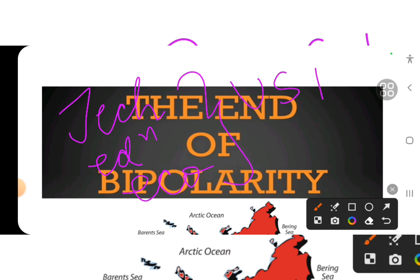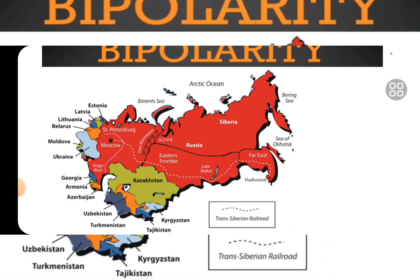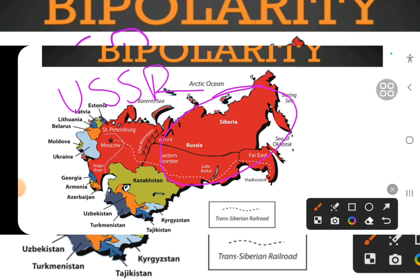USSR stands for Union of Soviet Socialist Republics. Fifteen different countries came together to form the USSR. The major portion of USSR was Russia. Soviet means organization or council, and 15 different countries came together on shared principles and ideology to form a Union — that is the USSR.